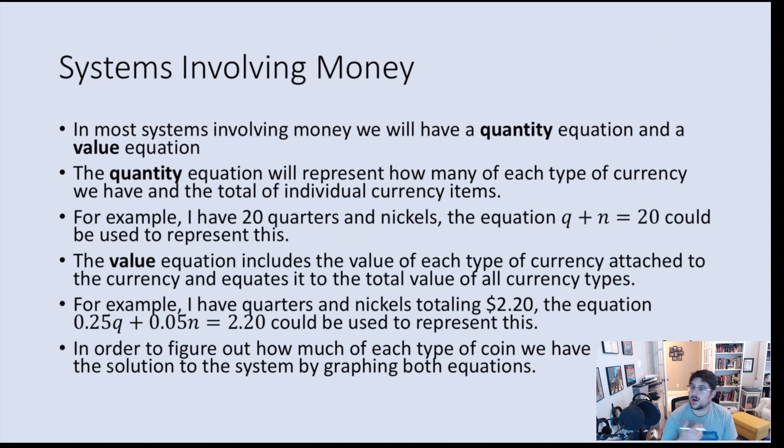Now let's talk about money. Because a lot of word problems like this are going to involve money, primarily coins. So typically what we will have is we will have a quantity equation and a value equation. Quantity is a count. So we are looking for if I say I have 20 nickels and quarters, and the quarters plus the nickels, the number of individual coins I have would equal 20. That would be a quantity equation. A value equation is talking about the actual worth of that money.